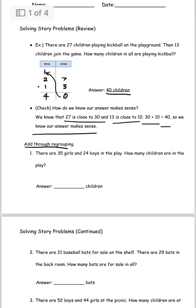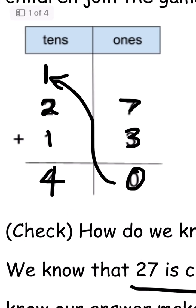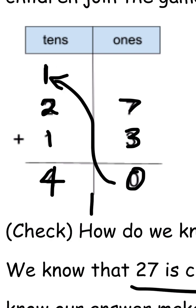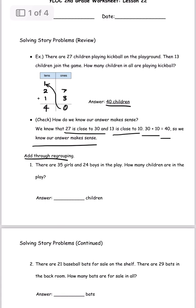We have to add through regrouping. Regrouping means when we have 10 after adding 7 and 3, since the 1 is on the tens place, we have to put 1 over there — that's regrouping. So for the next problem it says: there are 35 girls and 24 boys in the play. How many children are in the play? We have to use this regrouping method.